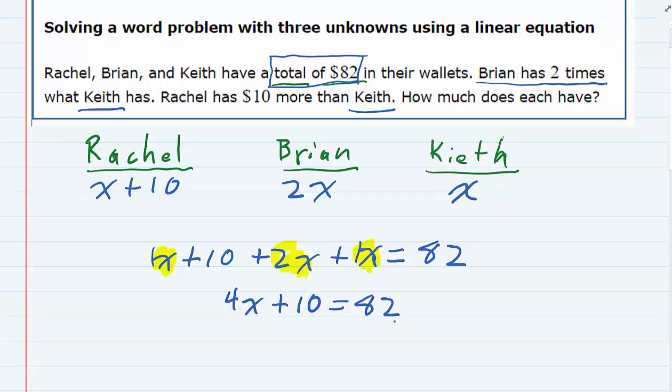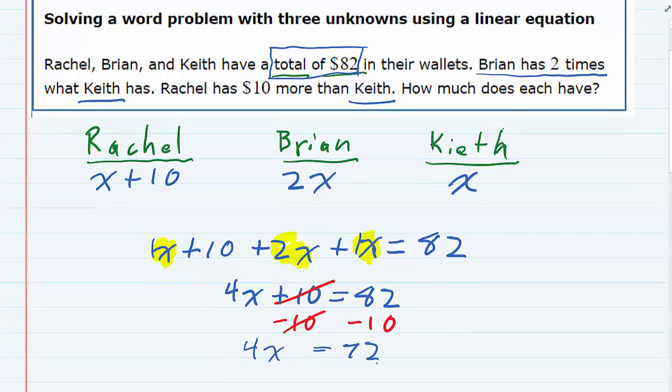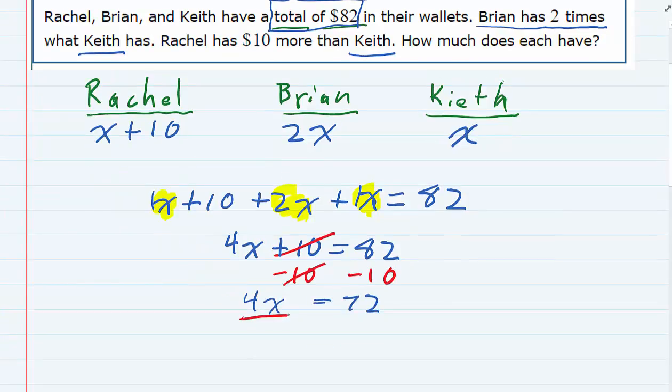To continue solving that for X, we would want to subtract that 10 over to the other side so that we can work on getting that X by itself. And we now have 4X equals 72. Then we can divide the 4 on both sides so that the 4s cancel and I have X equals 18.